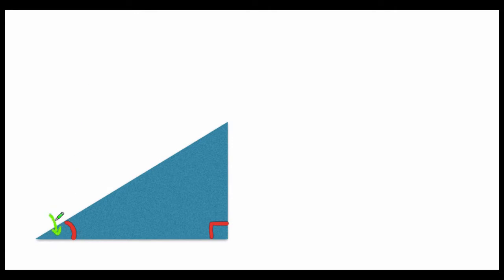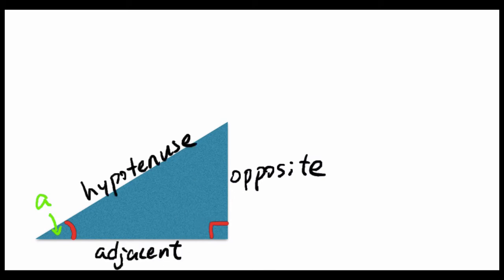Say we have an angle which I call A here. Then there is a side that is on the opposite end of my angle, and there is a hypotenuse, and there is a side that is adjacent to my angle.